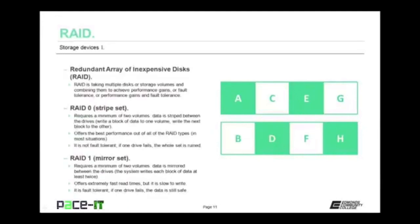Now let's move on to RAID. RAID stands for Redundant Array of Inexpensive Disks. RAID takes multiple disks or storage volumes and combines them to achieve performance gains, fault tolerance, or both. The first RAID is RAID 0, also known as a stripe set. It requires a minimum of two volumes. Data is striped between the drives — write a block of data to one volume, then the next block to the other. RAID 0 offers the best performance out of all RAID types in most situations, but it is not fault tolerant. If one drive fails, the whole stripe set is ruined.